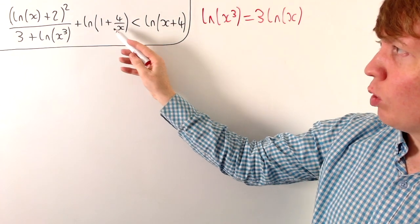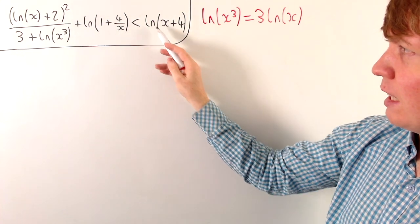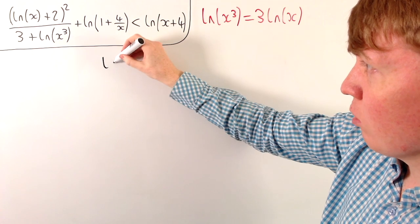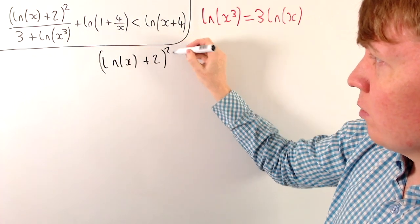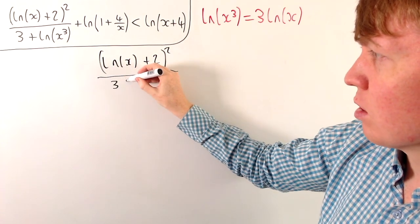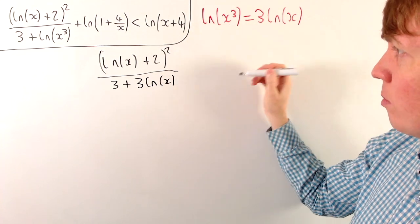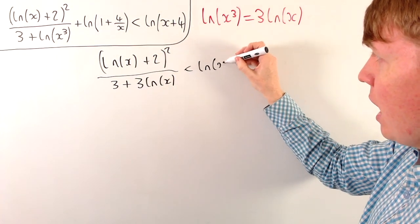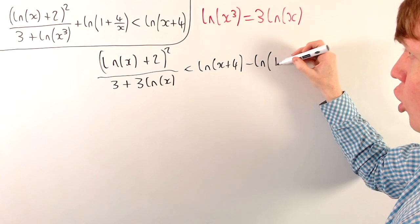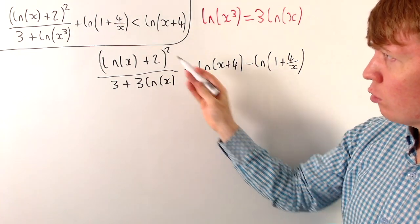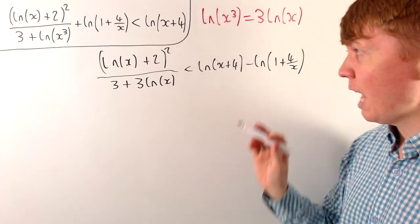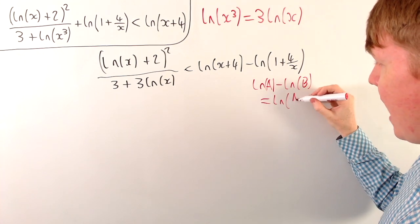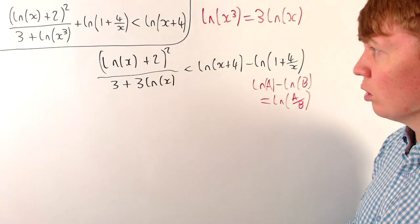The next thing we'll look at is the ln(1 + 4/x) term, to see if we can combine it with our ln(x + 4) term into a single logarithm. We've got this fraction ln(x+2) all squared divided by 3 plus 3 ln x. Then if we subtract the ln(1 + 4/x) term on both sides, we can use the law of logarithms: ln(a) minus ln(b) equals ln(a/b), combining those two terms into a single logarithm.